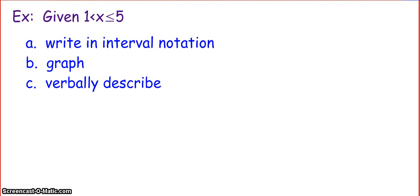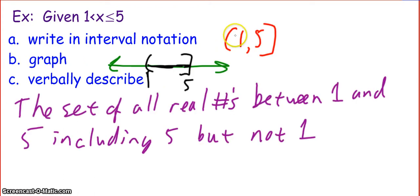So here I want you to try this one on your own. You have the inequality 1 is less than x, which is less than or equal to 5. I want you to write this in interval notation, graph it on the number line, and then verbally describe it. Pause the video, do that, and unpause when you're ready to check your work. Okay, so our interval notation should look like this: parenthesis 1, comma 5, bracket — so (1, 5]. The graph should look like the interval notation but with shading in between. And the verbal description could be: the set of all real numbers between 1 and 5, including 5, but not 1.